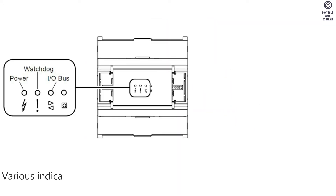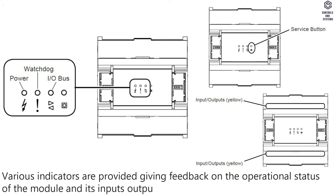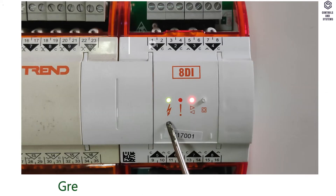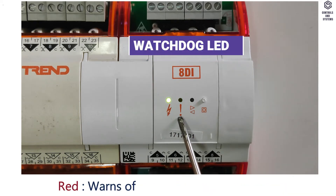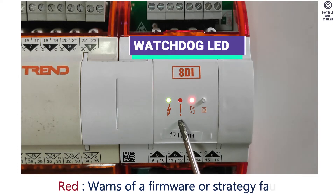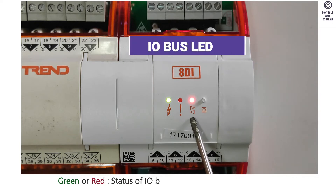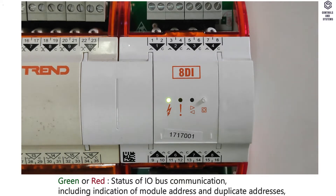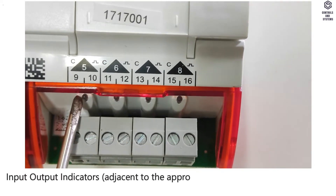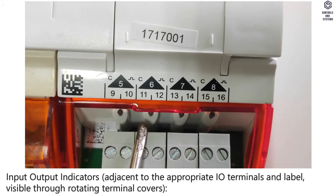Indicators: various indicators provide feedback on the operational status of the module and its inputs/outputs. Power LED glows green — indicates condition of input power supply. Watchdog LED glows red — warns of a firmware or strategy fault. I/O bus LED glows green or red — indicates status of I/O bus communication, including module address and duplicate addresses.